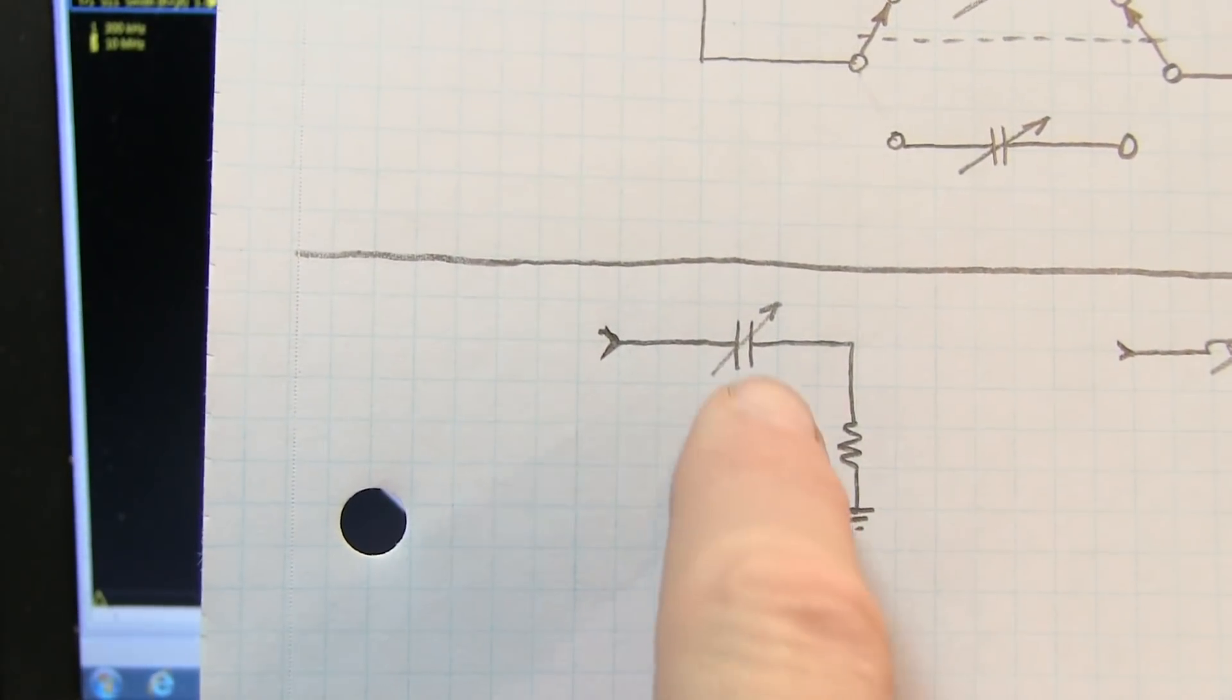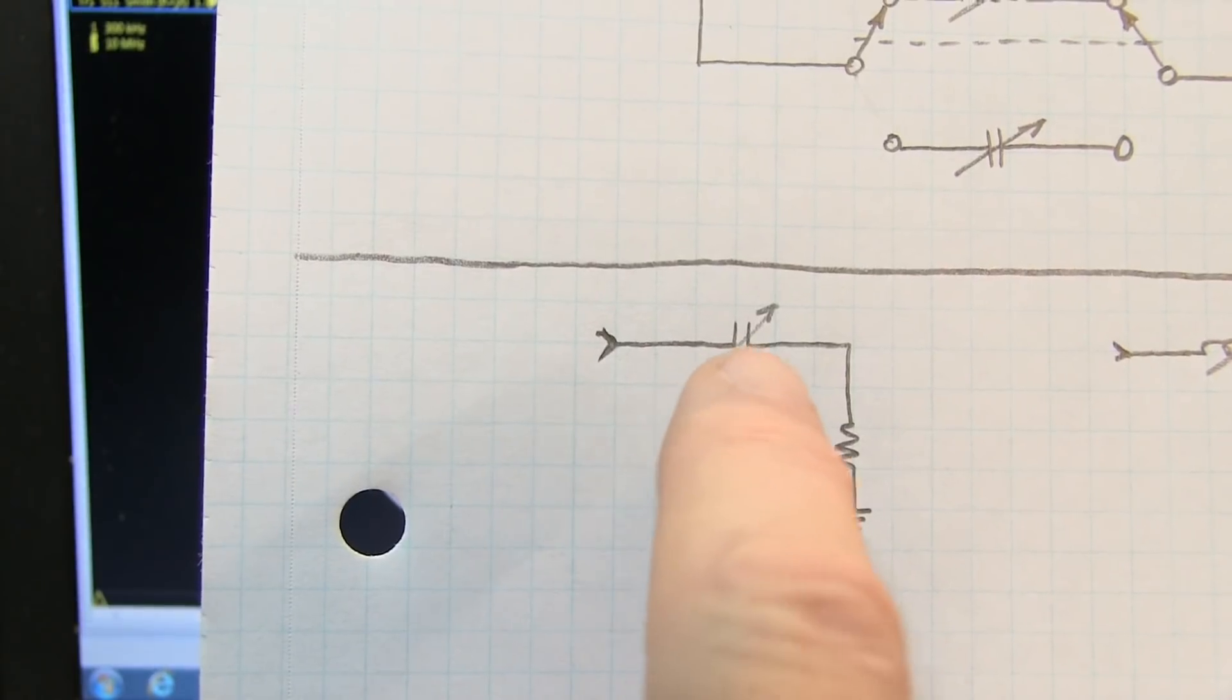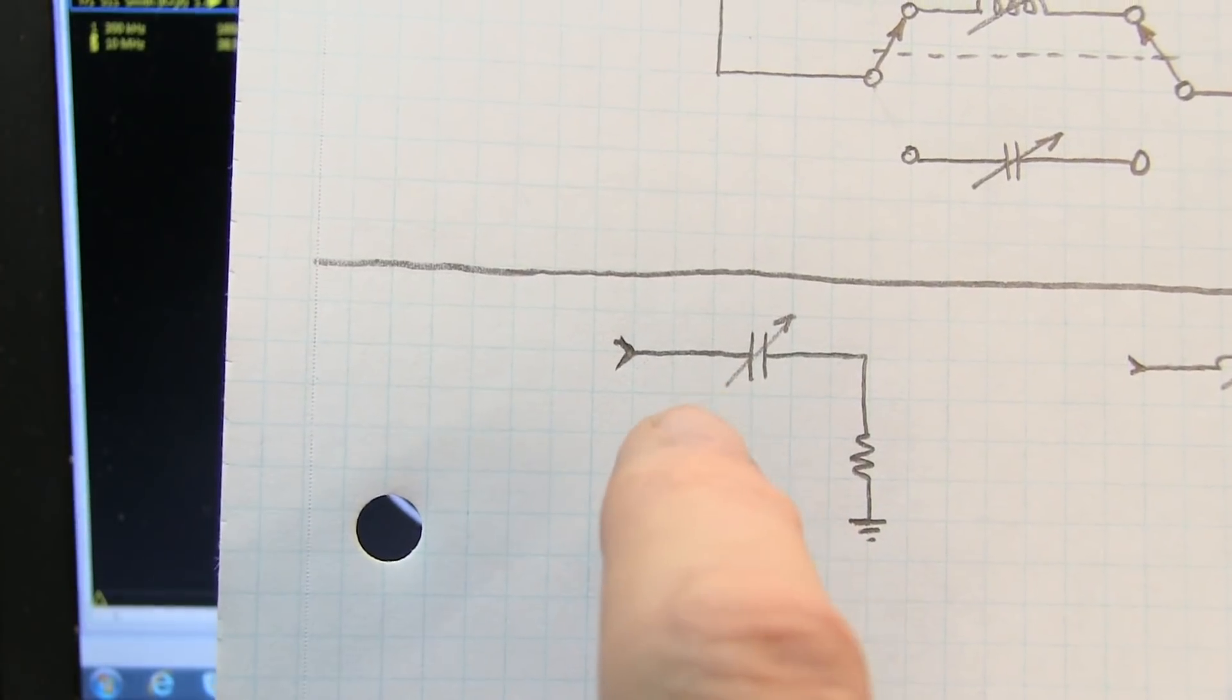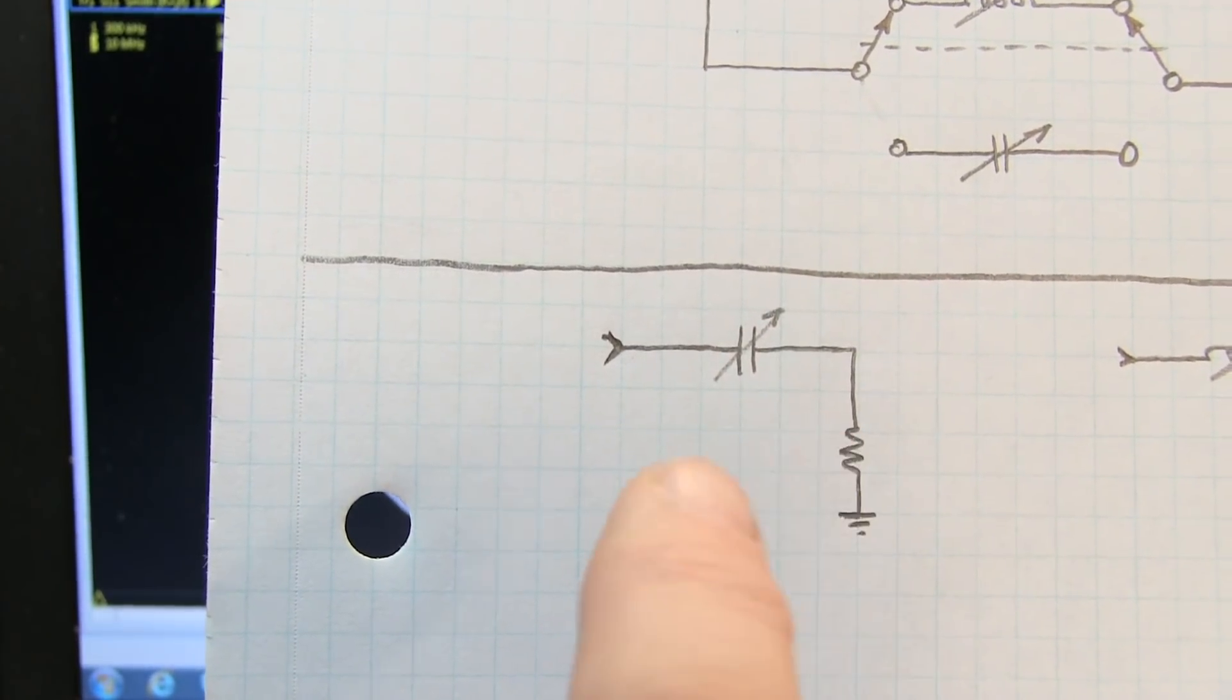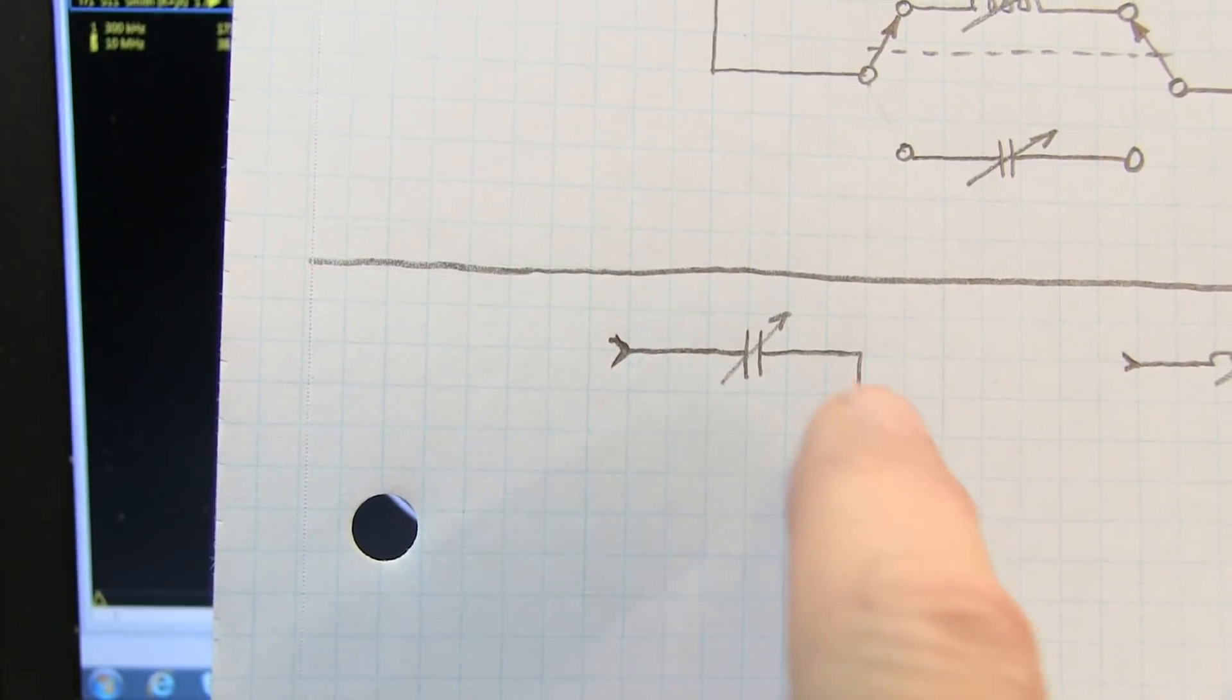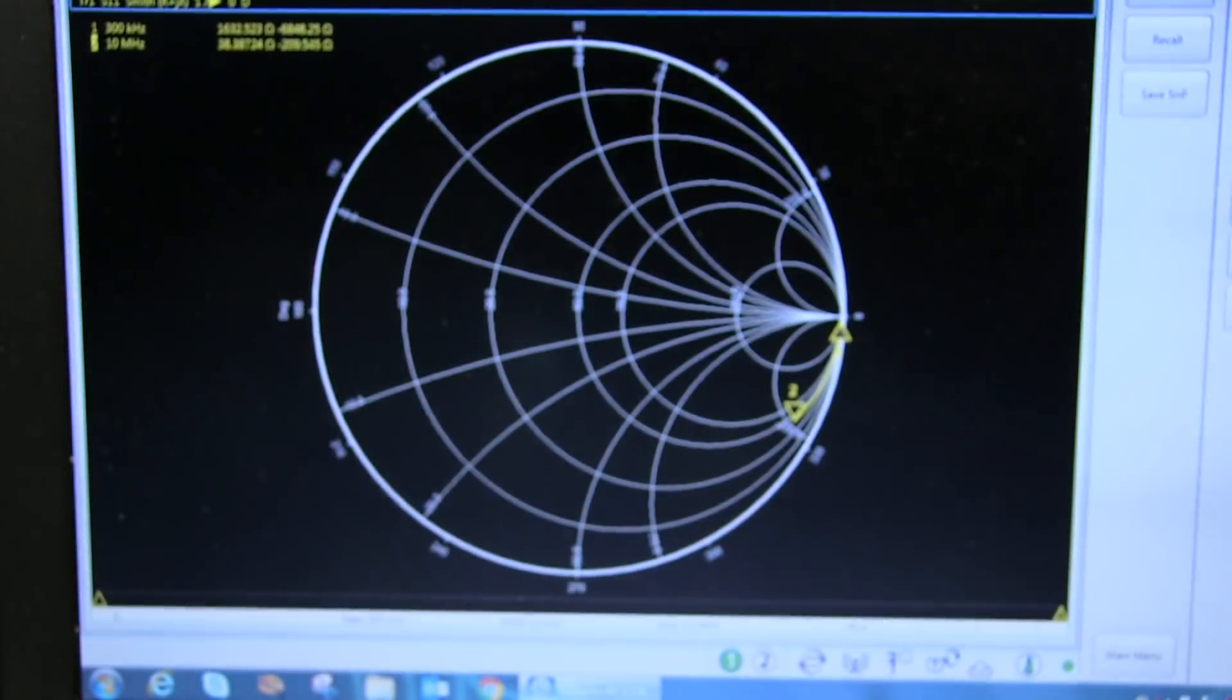Let's start off by putting a series capacitor with our load. Now if the capacitor is very small and the frequency is very low, this is going to look more and more like an open circuit. And as the capacitance goes up and the frequency goes up, the capacitor becomes more and more out of the circuit, and essentially we're going to see mainly our 50 ohm load. Let's take a look at it on the VNA.